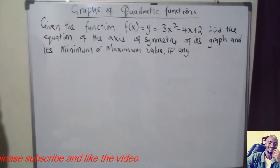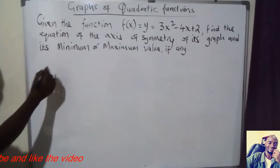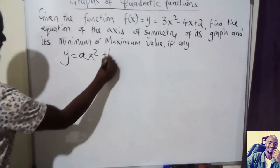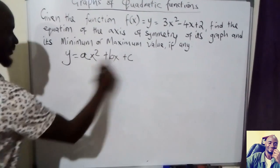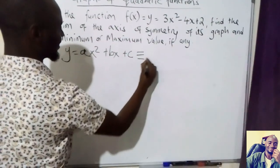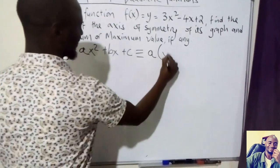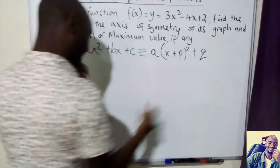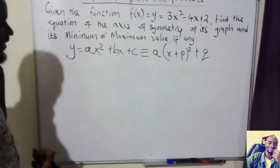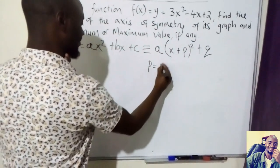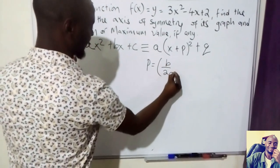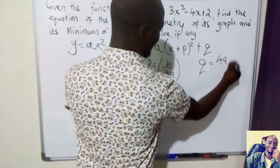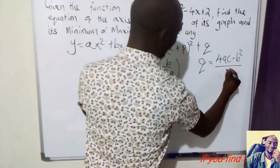We are looking at graphs of quadratic functions. A quadratic function is a function of the form y equals ax squared plus bx plus c. The equivalent form is a times the quantity x plus p squared plus q, where p and q make up the coordinates of the turning point. Now, p is equal to b over 2a, and q is equal to 4ac minus b squared over 4a.